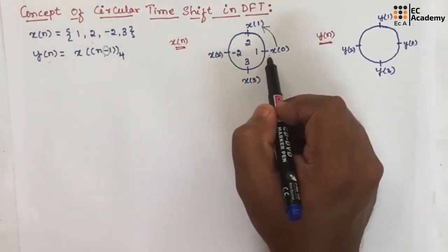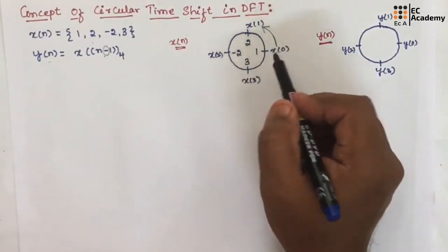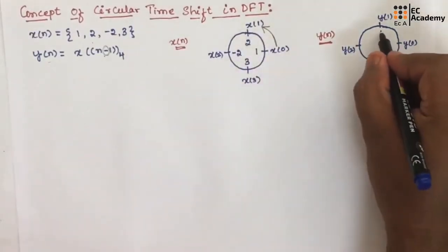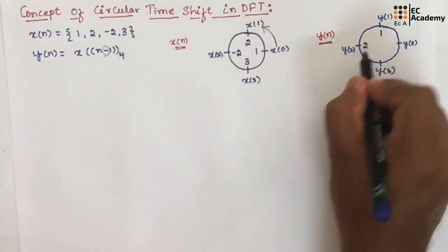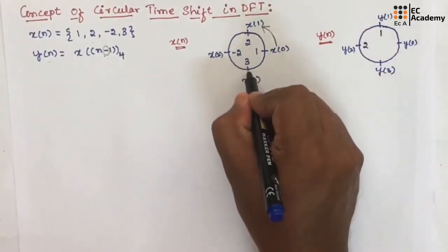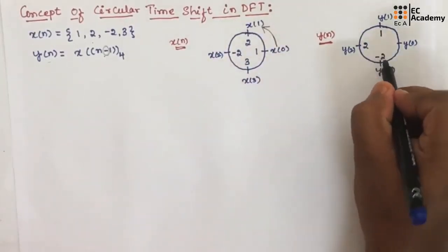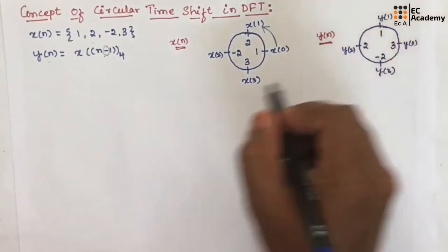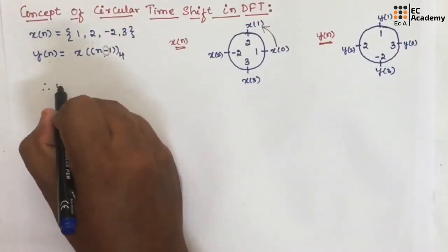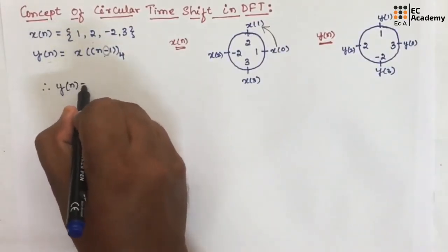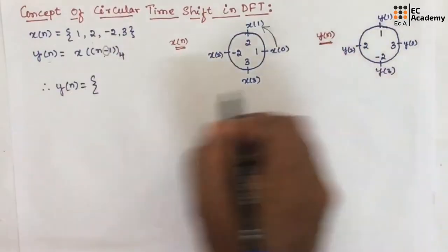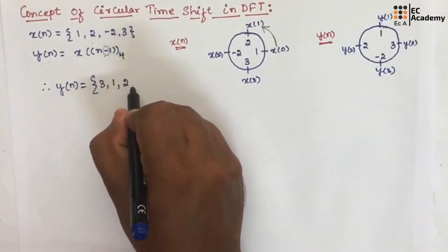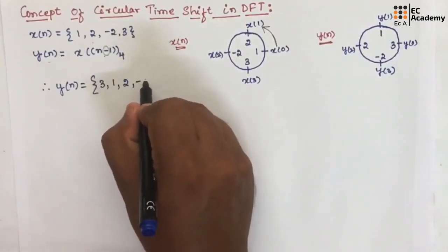If we rotate x of n one step in the anti-clockwise direction, 1 will shift here, 2 will shift here, minus 2 at this point, and 3 will shift at this point. Therefore, we can write y of n: y of 0 is 3, y of 1 is 1, y of 2 is 2, y of 3 is minus 2.